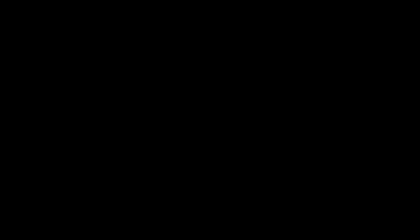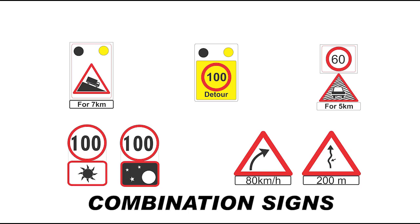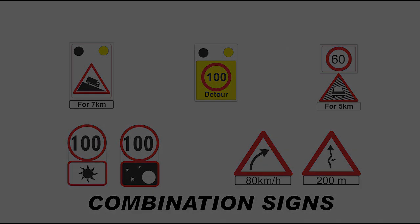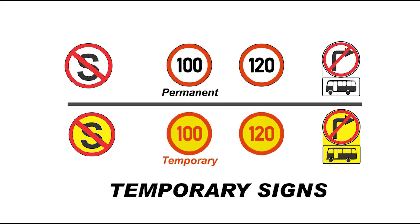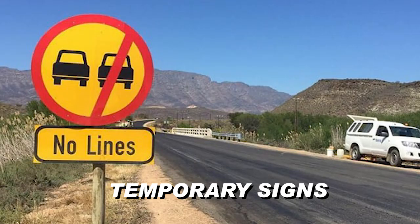Combination signs combine different messages and symbols. These signs help people be aware of more than one danger, hazard, or instruction — having two or more messages on one sign emphasises the importance of following specific procedures. Temporary road signs have a yellow background and are found on any roadside to display a temporary message.